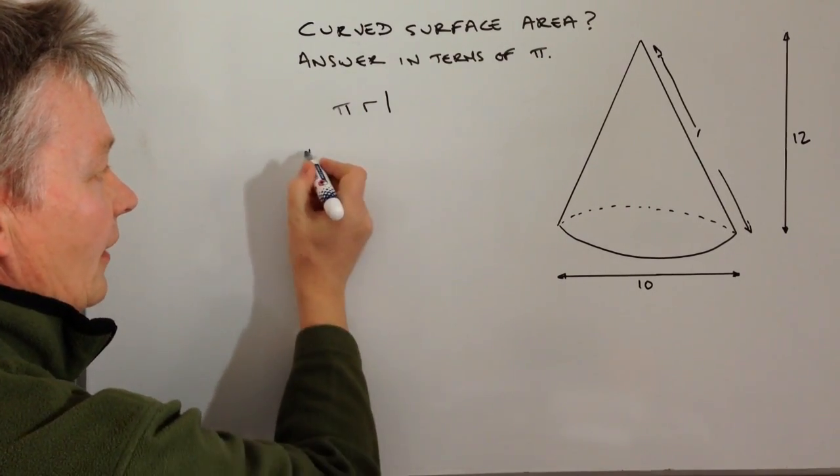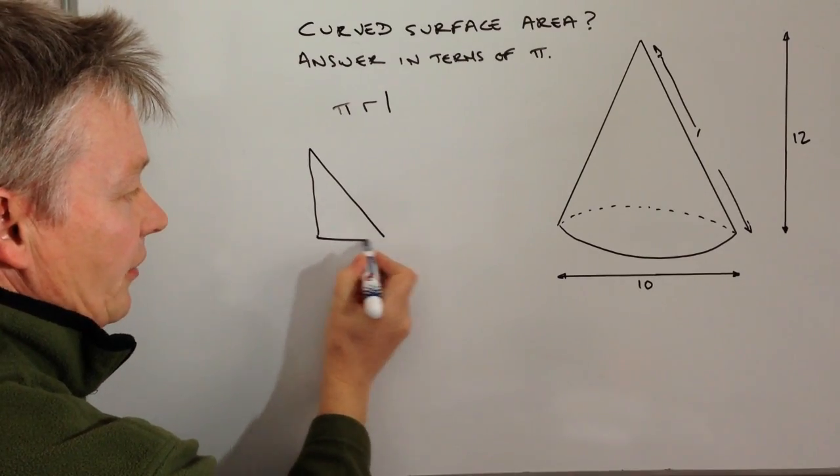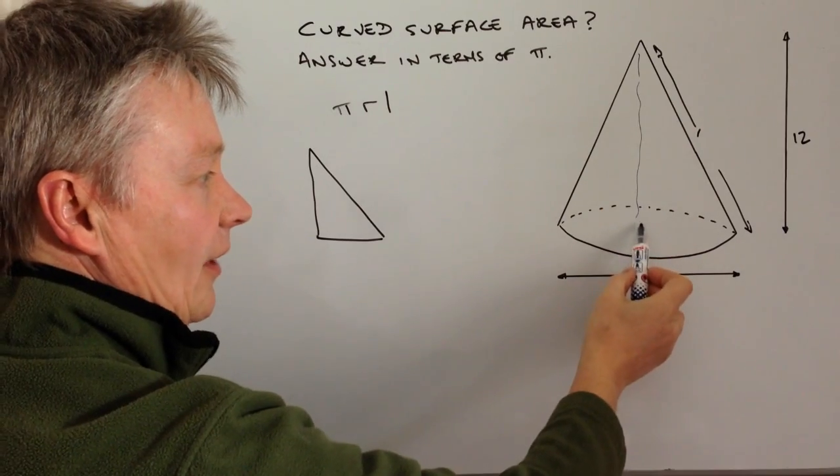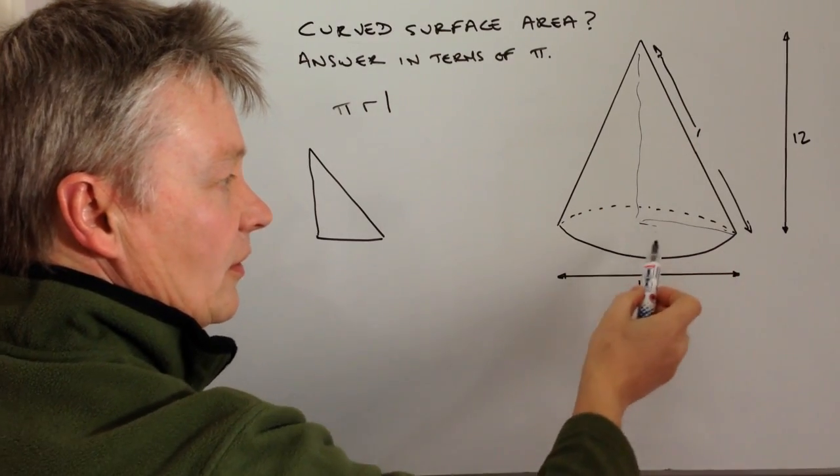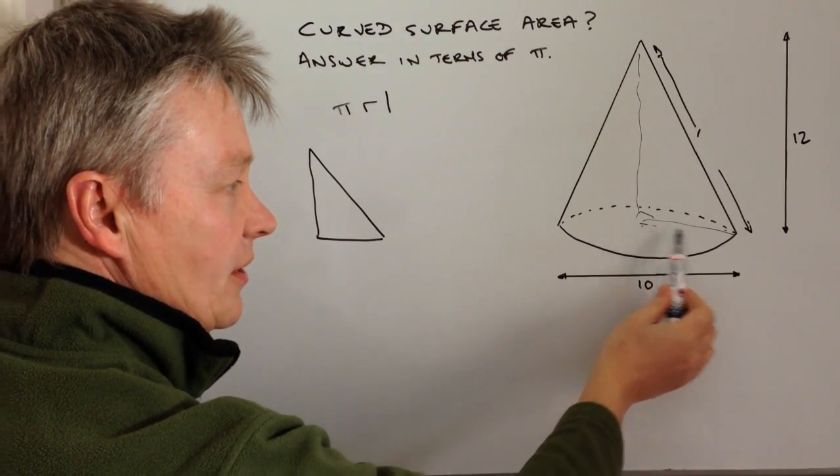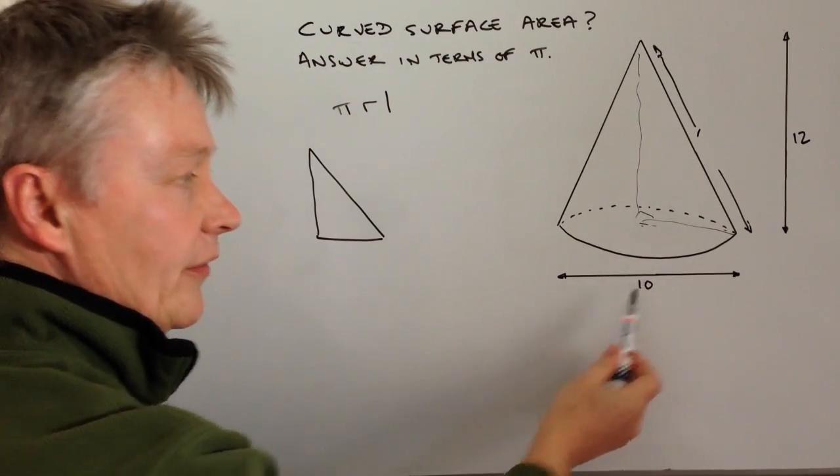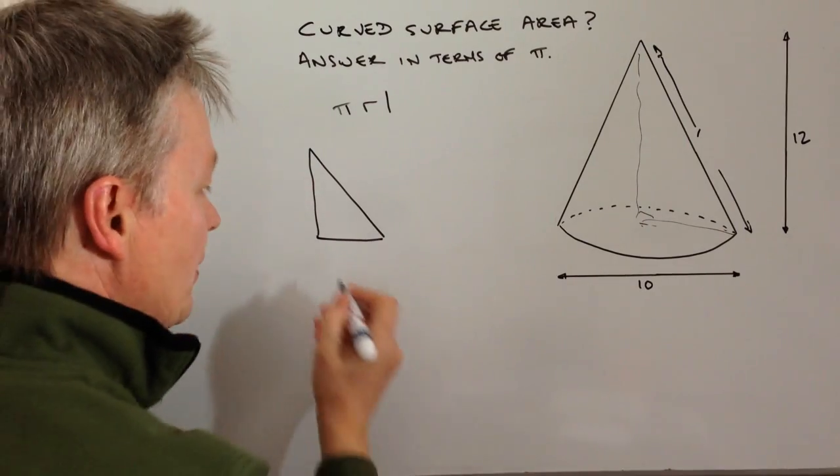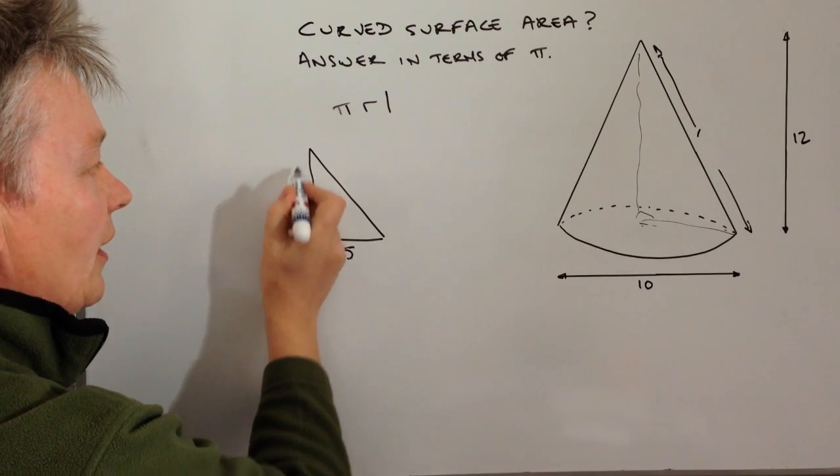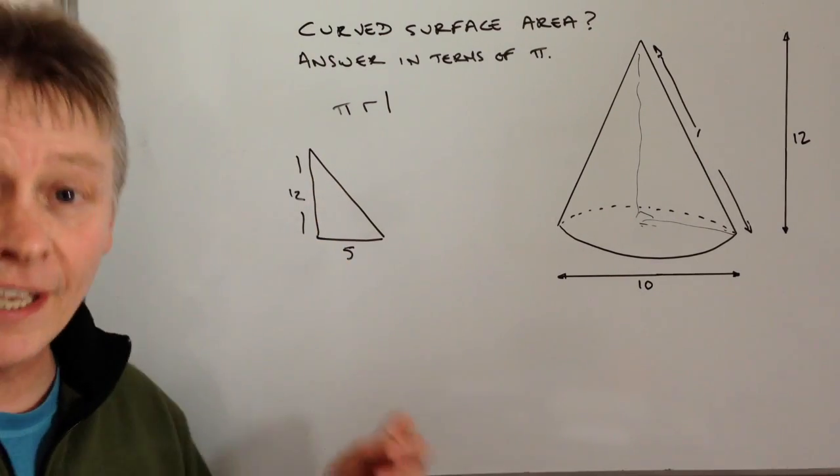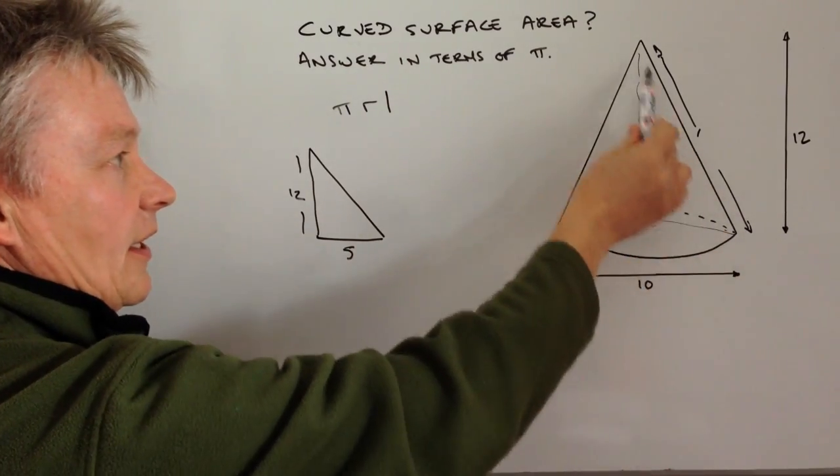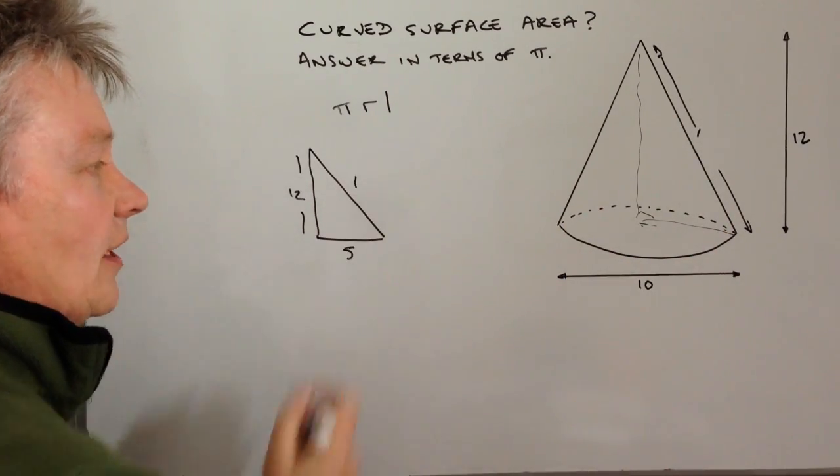Let's break this down. I've taken a triangle out of the cone here—a right angle triangle. The base of this is going to be half of the diameter, so this is 5, and the height is the overall height of 12. To calculate our formula we need to know what this slant height is.